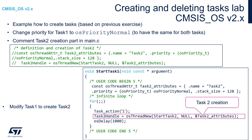Let's start with the task creation. We can use an example from the previous part — for example, the yield test — and change the priority of task 1 to osPriorityNormal to have the same priority for both tasks. Then we need to comment out the task 2 creation part in main.c, and within the start task 1 function we can create task 2.